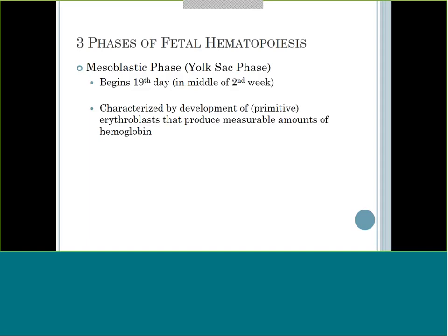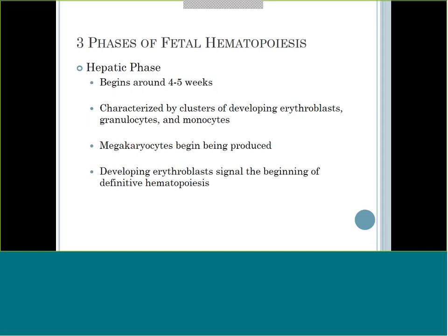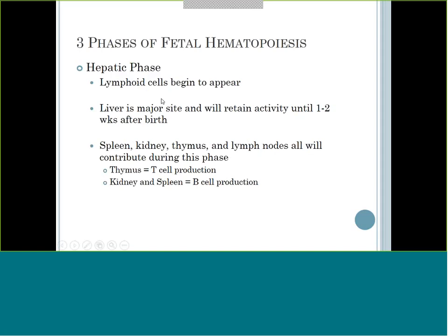Around four to five weeks, we start making cells in the liver - the hepatic phase - where we start to see more cells being produced. The erythroblasts developing signal the beginning of definitive hematopoiesis. The liver is going to maintain being a major site of development until the bone marrow takes over, but it will stay active until even shortly after birth. The bone marrow will eventually take over the liver phase.